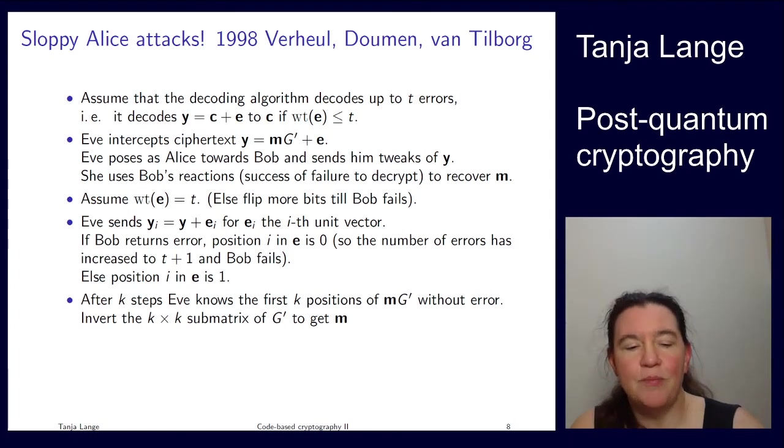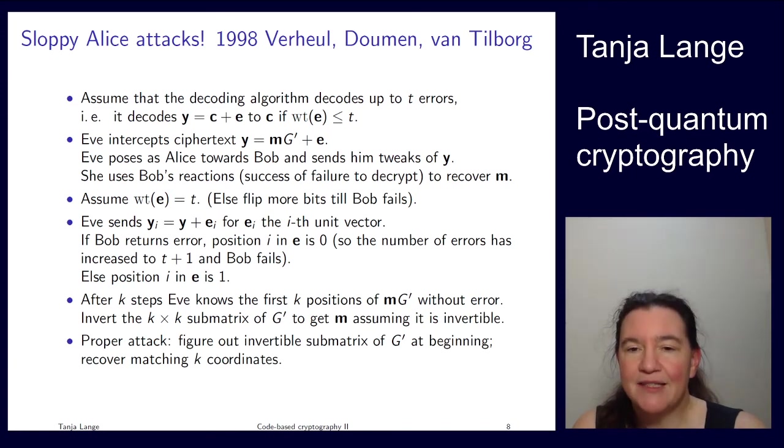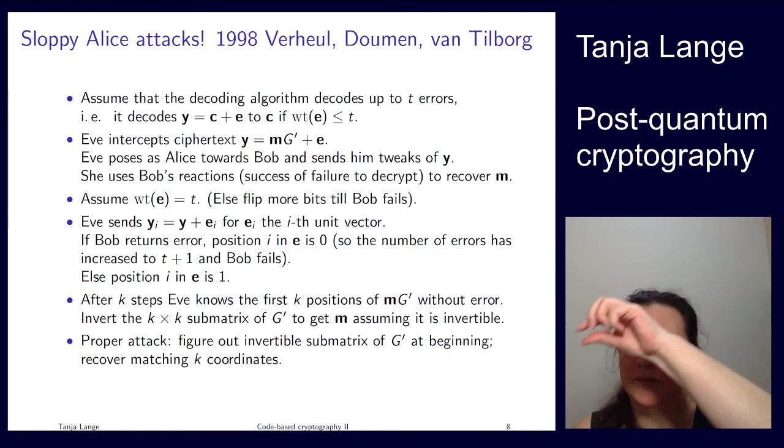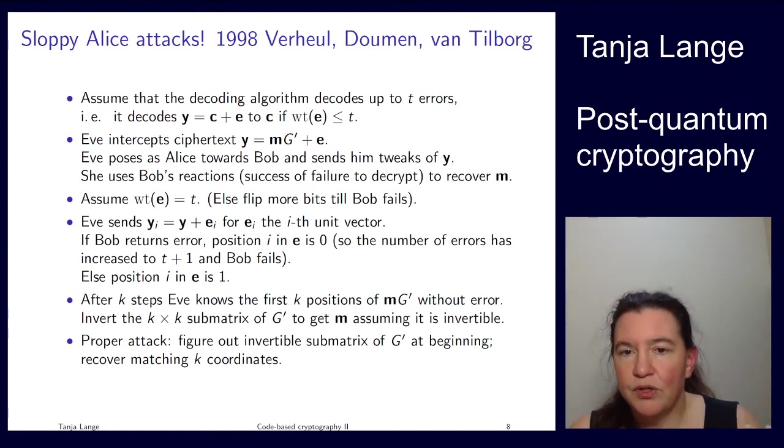Okay, what you would be doing to do this properly, you first figure out the positions like the k by k sub-matrix, so just k columns of g' which are invertible. And then you just probe for those k positions. And then you guarantee that you can invert it, and then you're getting m from that. So that means Bob receives lots and lots of copies, well, typically k copies of small variations of the ciphertext. So the name sloppy Alice comes from Bob receiving so many invalid ciphertexts from Alice that he thinks that Alice is sloppy. Well, she is not, it's Eve posing as Alice, but he doesn't know that.